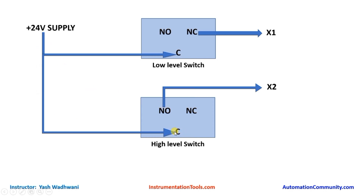Similarly, for the high level switch, we give 24V supply to the common and connect the NO terminal to X2 of the PLC. When the high level switch floats upward, the common and NO terminals are closed, so power flows to X2, signaling the PLC that the water level is high. This is the working of the level switches.